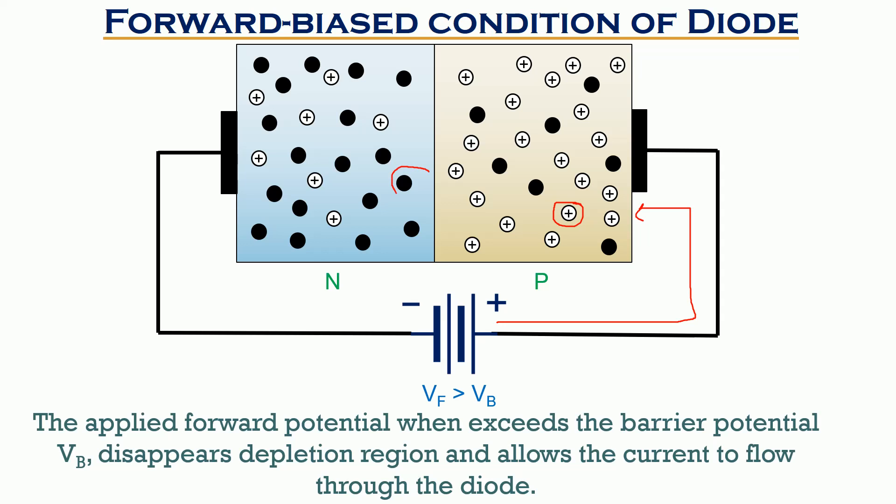This repulsive force provides sufficient energy to the electrons and holes to drift across the junction. Only this movement of majority carriers across the junction is responsible for the flow of electric current through the device.